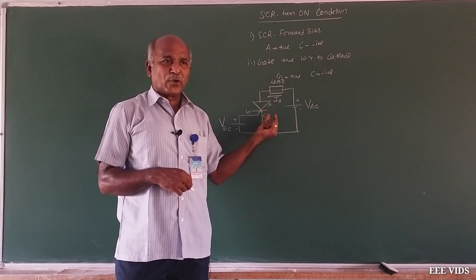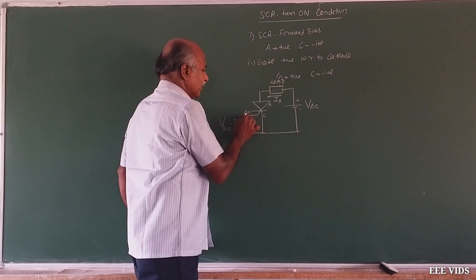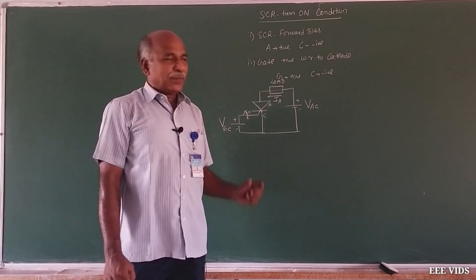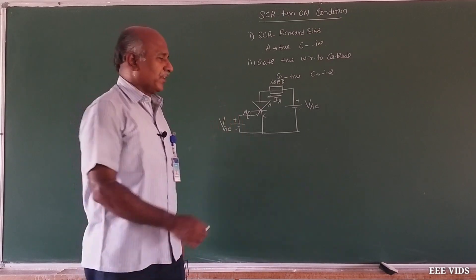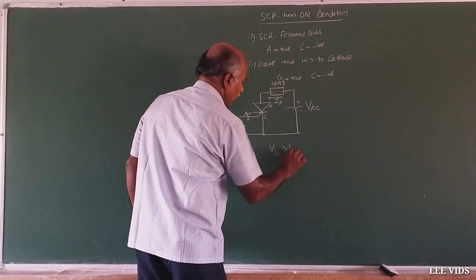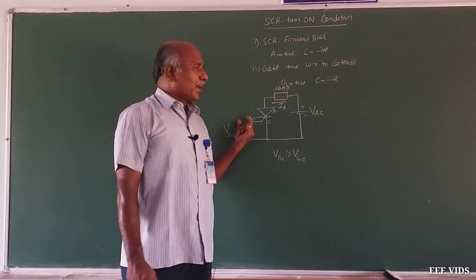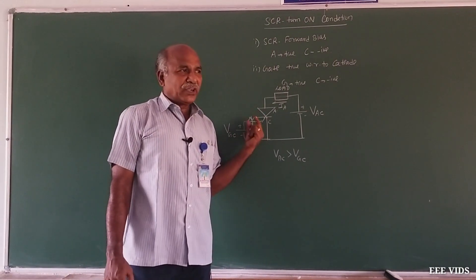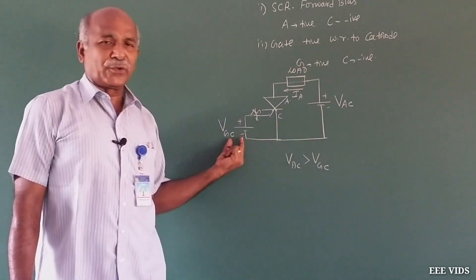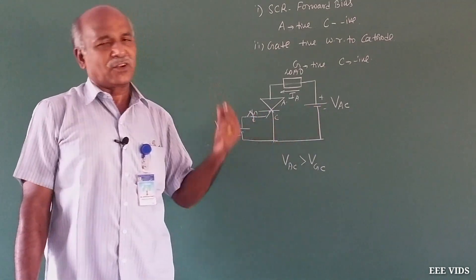Once the SCR is in on state, the gate signal is removed. That means a switching action is used — the initial switch is closed and the SCR turns on. So the gate-to-cathode operates on low voltage, and the anode-to-cathode is at high voltage. The cathode is common to both circuits.